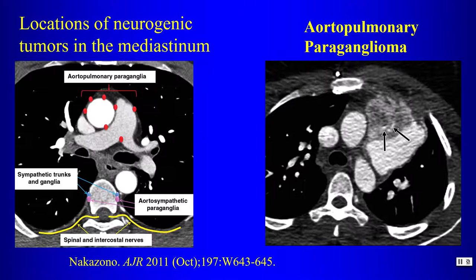A representation of neurogenic tumor locations shows aortopulmonary paraganglia, the sympathetic trunk, sympathetic ganglia, and spinal and intercostal nerves — here is an aortopulmonary paraganglioma.